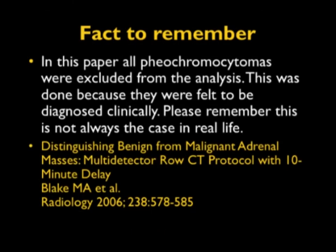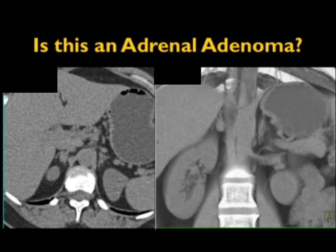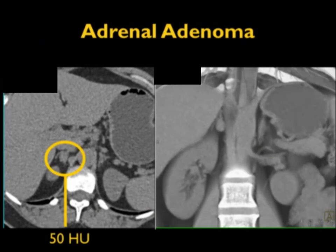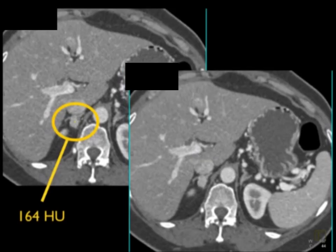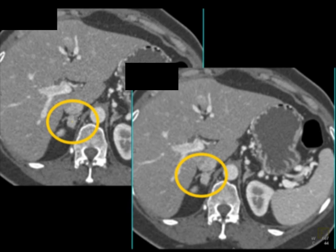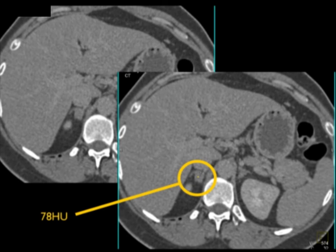There is one important pitfall: most articles initially published about washout characterization of adenomas left off pheochromocytomas, because they felt anyone could diagnose a pheo. Pheos will wash out more than 50%, but if a lesion enhances above 120 HU, I am not going to call it an adenoma. In our experience, most adenomas are under 100 HU at one minute. If things go above 120 HU, it's a pheo until proven otherwise. For example, a right adrenal lesion measuring 50 HU on non-contrast enhanced up to 164 HU with IV contrast — no matter what the washout value, that is a pheochromocytoma. It washed out to 78 HU quickly, but it's still going to be a pheochromocytoma.